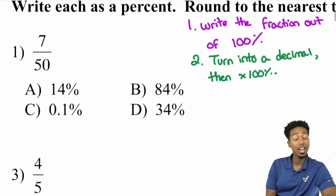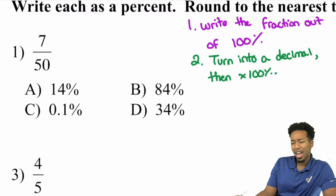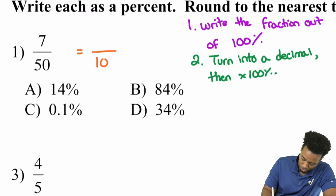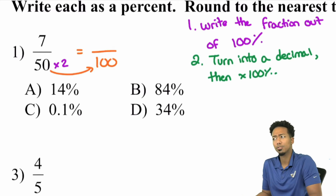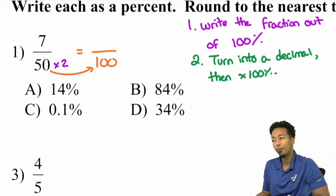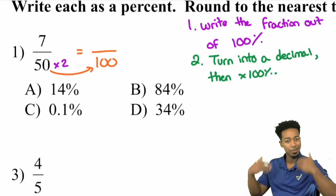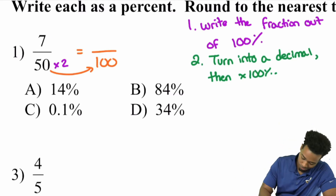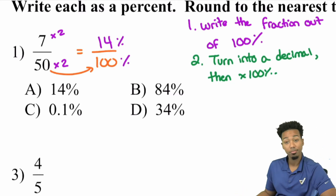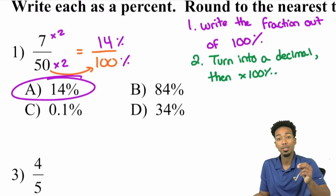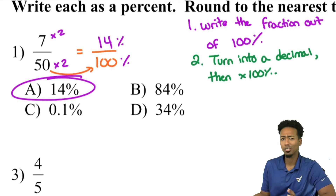Let me show you method one — writing the fraction out of 100% — for 7 over 50. How do I get the denominator to be 100? I can multiply 50 by 2 to get 100. Whatever I do to the denominator I do to the numerator, so I multiply the top by 2 as well: 7 times 2 is 14. So this becomes 14 over 100, which is 14%. Remember, it has to be multiplication or division — not addition or subtraction.